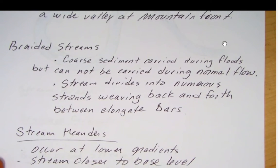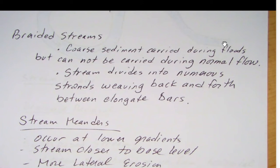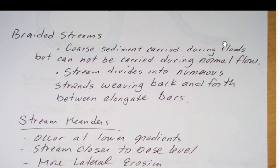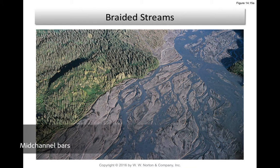The book also mentions the concept of a braided stream, where coarse sediment is carried during floods but cannot be carried during normal flow. The stream divides into numerous strands weaving back and forth between elongate bars. We have these bars — sometimes called mid-channel bars because they occur in the middle of the channel — and this would be an example of a braided stream.